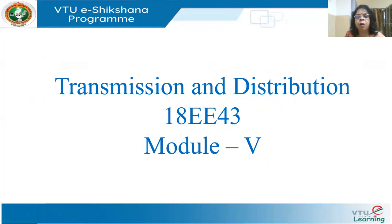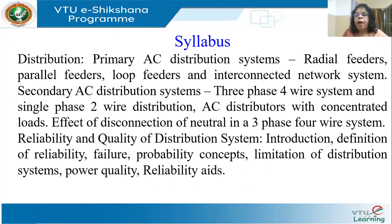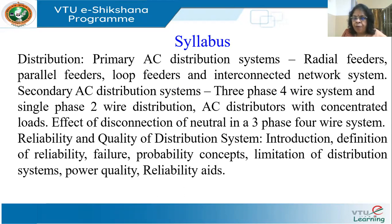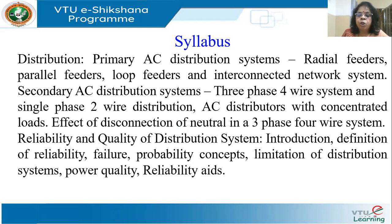We are now starting the last module of the course on transmission and distribution. This module deals with AC and DC distribution systems, radial feeders, parallel feeders, loop feeders, and interconnected networks. We will also cover secondary AC distribution systems — four-wire and single-phase two-wire — what happens if you disconnect a neutral in a three-phase four-wire system, and an introduction to reliability, power quality, and probability theory applied to reliability assessment.